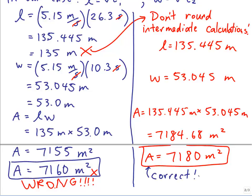Note that that's different than we got before: 7160. So moral of the story is, don't round your intermediate calculations. Wait until you have a final answer, and then round it off to the right number of significant figures.